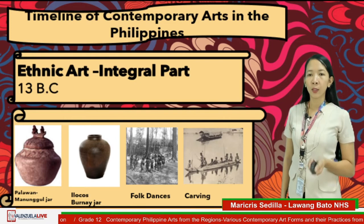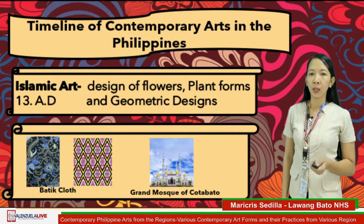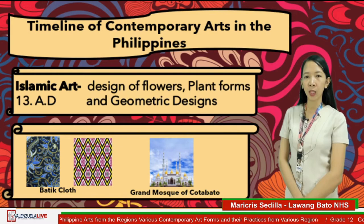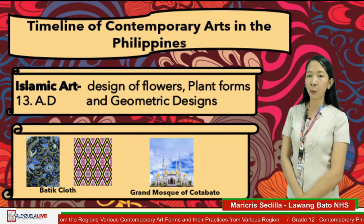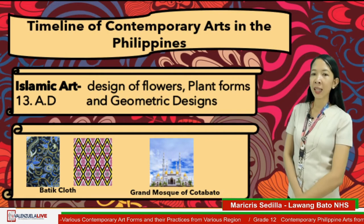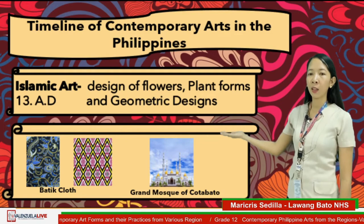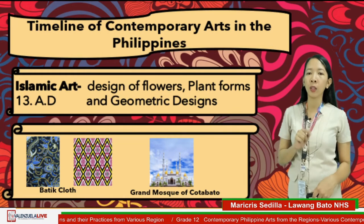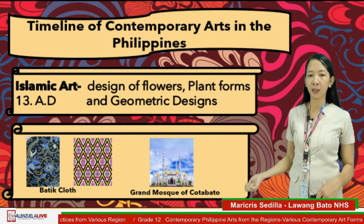The next is Islamic art. In the 13th century, traders and missionaries introduced the religion of Islam in the Philippines. It is characterized by designs of flowers, plant forms, and geometric designs, used in architecture like buildings, houses, and churches. An example is the batik cloth — featuring floral and geometric designs — and the Grand Mosque of Cotabato.